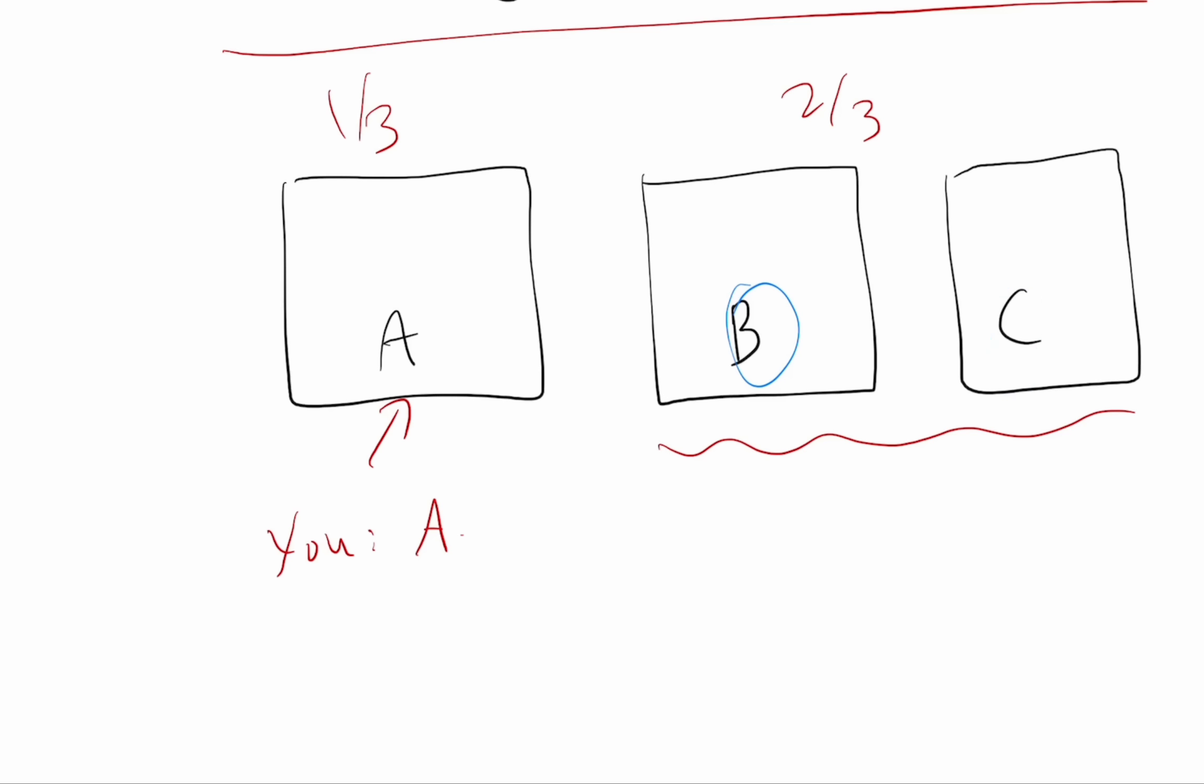So they're using systematic information, and at least one-third of the time, or two-thirds of the time, when the prize is in fact behind one of these doors, they have to choose which one to open, and they're revealing some information in that sense, and that's why switching is better.